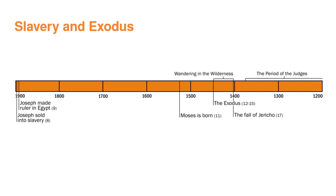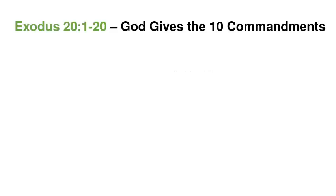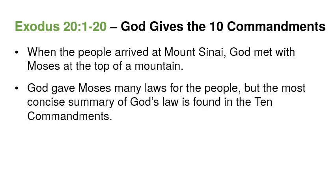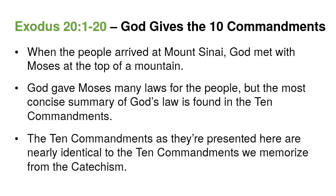Looking at the timeline very briefly, we are still right around the year 1446 BC. Going to the first of our Bible readings for today, Exodus chapter 20 verses 1 through 20, where God gives his people the Ten Commandments. When the people arrived at Mount Sinai, God met with Moses at the top of a mountain. God gave Moses many laws for the people, but the most concise summary of God's law is found in the Ten Commandments. The Ten Commandments as presented here are nearly identical to the ones we memorize from the Catechism. There are some differences we'll talk about, but this is the giving of the Ten Commandments basically as we still memorize them today.